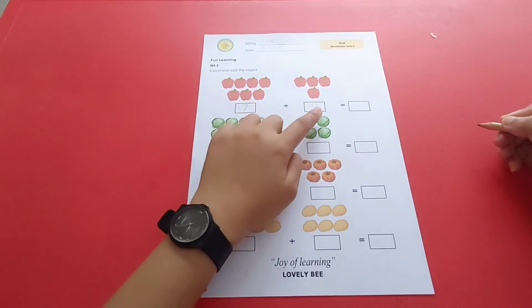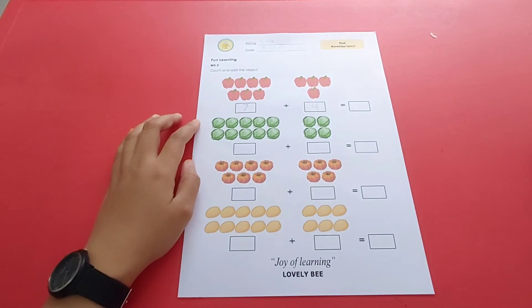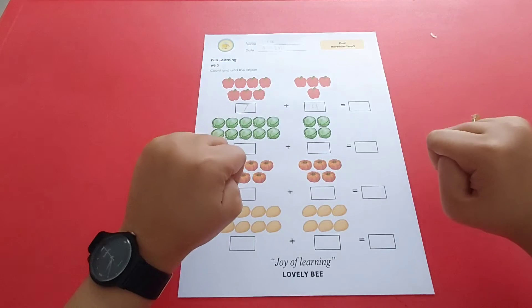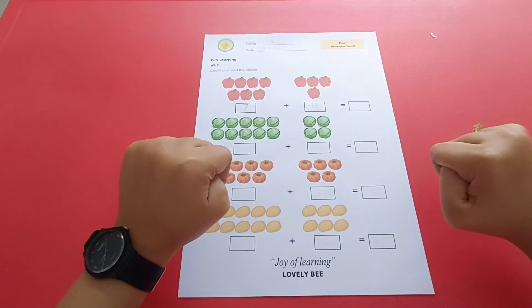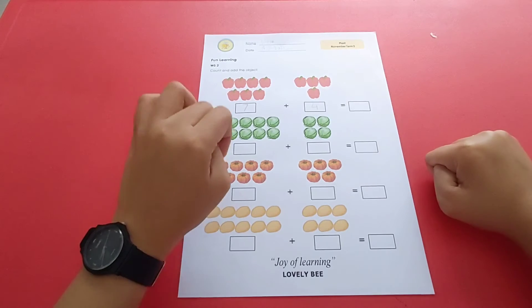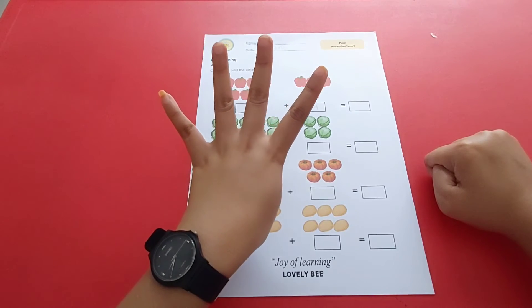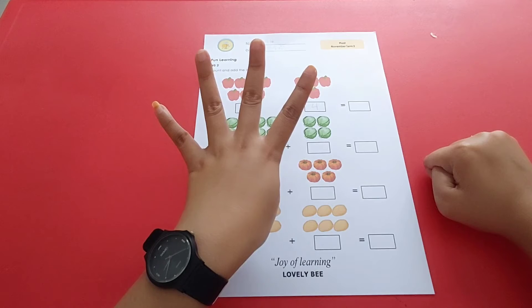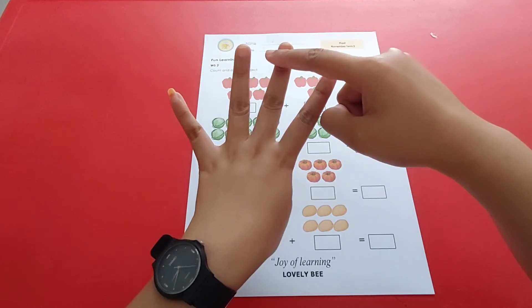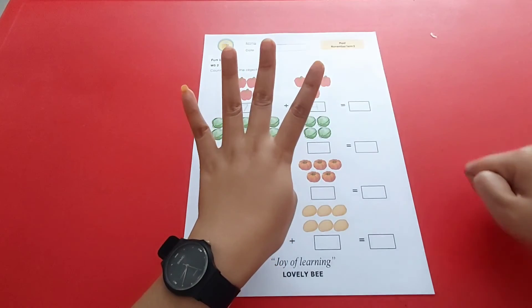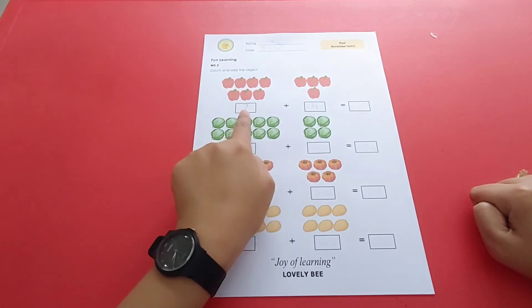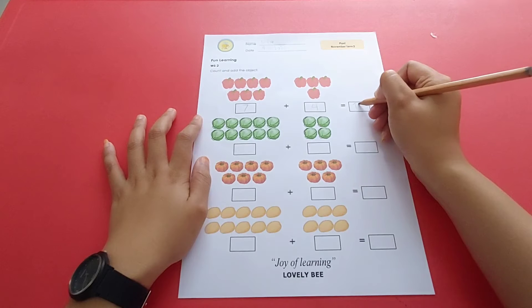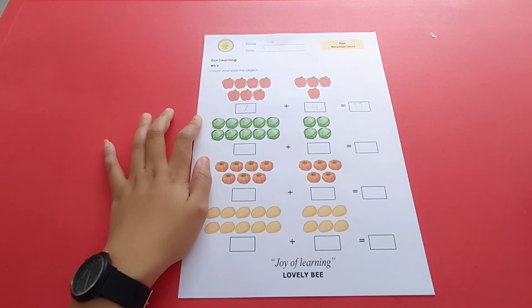Seven plus four equals... Make number seven on your hand and then keep it inside your head. So there's number seven inside your head. Now let's make number four on your hand. Now what number comes after number seven? Seven, eight, nine, ten, eleven. It means that seven plus four equals eleven. Let's write down eleven over here, like that.